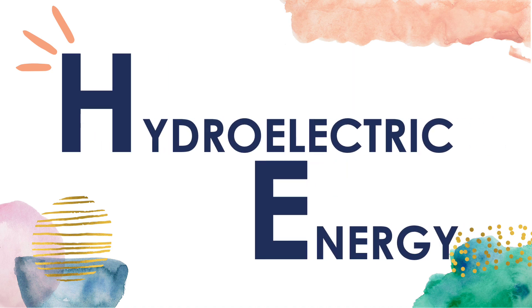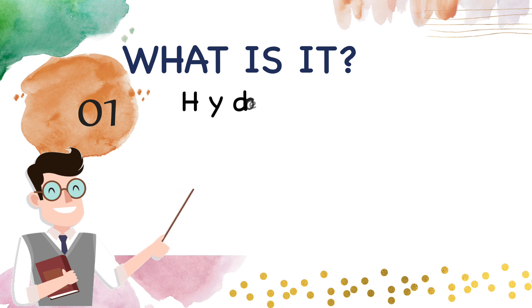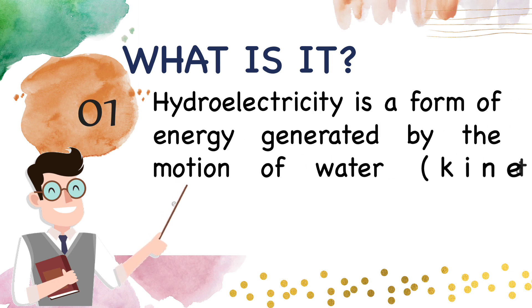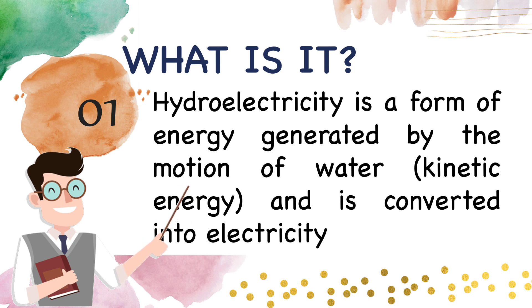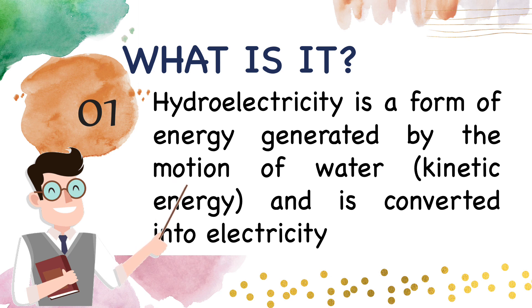Another form of renewable energy is hydroelectric energy. Hydroelectric energy is a form of energy generated by the motion of water and is converted into electricity. It is made from the constant motion of the water cycle and is a result of solar heat and the gravitational forces from the Earth. The constant fall of water as part of the water cycle is what produces hydroelectricity.